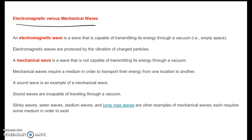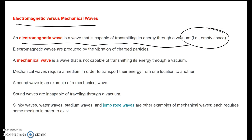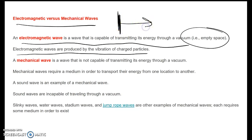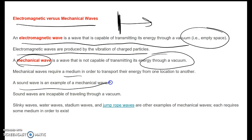Now, electromagnetic and mechanical waves. Electromagnetic waves are capable of transmitting through a vacuum — like outer space. Light is electromagnetic; it travels from the sun to earth through the vacuum of space. Electromagnetic waves are produced by charged particles vibrating — the charged particles vibrate up and down while the light continues perpendicular to it. A mechanical wave, on the other hand, requires a medium and cannot travel through a vacuum. Sound waves need air and do not travel through a vacuum — there is no sound in space because there are no molecules to transport it. Slinky waves, water waves, stadium waves, and jump rope waves are all examples of mechanical waves, each requiring a medium to exist.